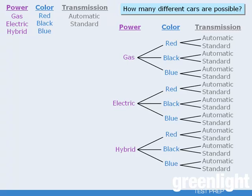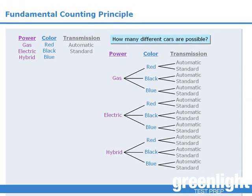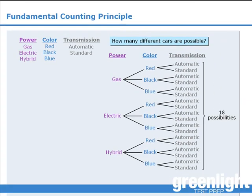So how many paths are there? Well, the total number of different paths will equal the total number of different endpoints, or leaves, on the tree. Notice that for each leaf there is a unique path. For example, this leaf is the last stage of this path representing a blue, gas-powered car with automatic transmission. Since this tree has 18 leaves, there are 18 possible paths, which means that it is possible to create 18 different cars given the following options.